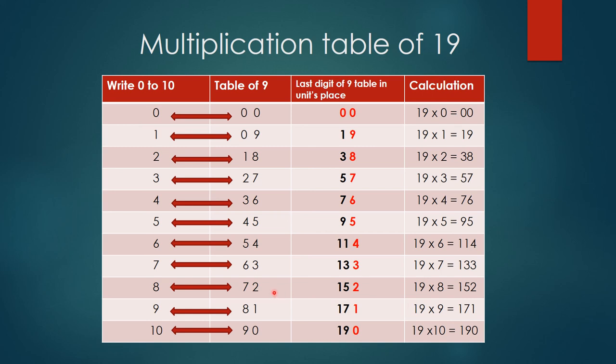Another example: 19×8. What's 9×8? 72, so write down 2 and keep 7 in mind. I'm looking for the 8th multiple, so 8+7=15. Therefore, 19×8=152. Practice this method and you'll find it useful for your children. If you like my video, please subscribe. Thanks for watching!